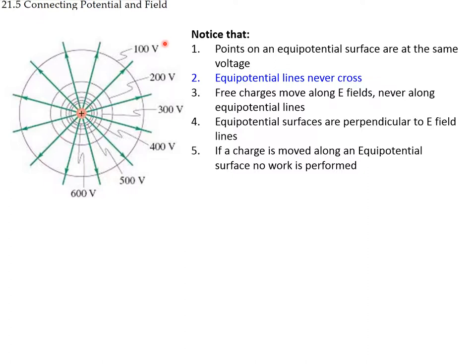All points on a single equipotential line or equipotential surface are at the same value of electric potential. These lines of electric potential never cross — if one line is for 200 volts and another for 100 volts, at a crossing point we wouldn't know which value applies, so consequently equipotential lines never cross.